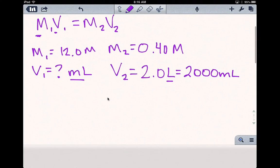Now we can plug everything in. Let's rearrange the formula to solve for V1, so we get V1 equals M2 times V2 over M1. Then we can stick all those numbers in.